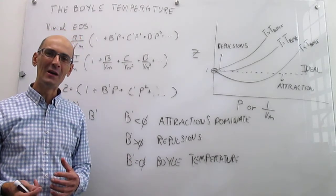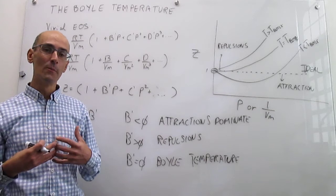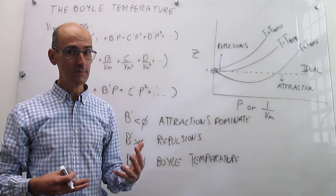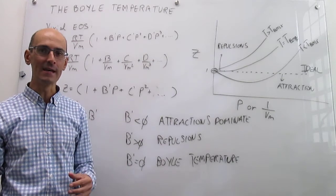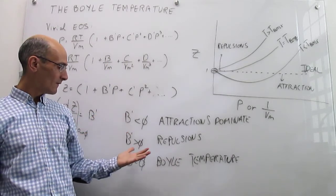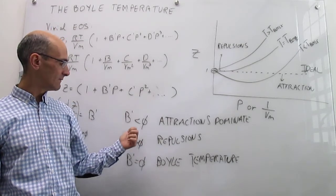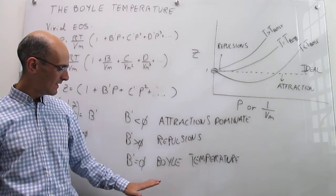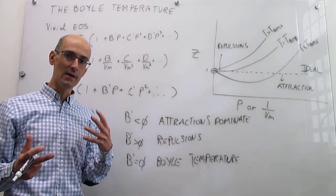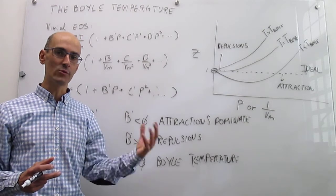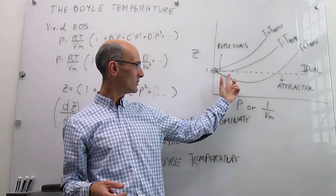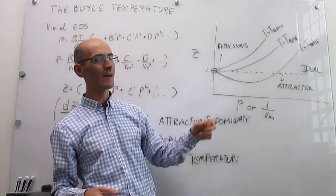To summarize: we have tried to provide an initial understanding of how some of the virial coefficients are related to the interactions between particles in a gas. If the B' coefficient is positive, repulsions are dominating at that particular temperature. If it is negative, attractions dominate. And if it is zero, we reach a limit called the Boyle temperature — the magic balance between attractions and repulsions — at which you resemble ideality over a longer range of pressures than at either lower or higher temperatures.